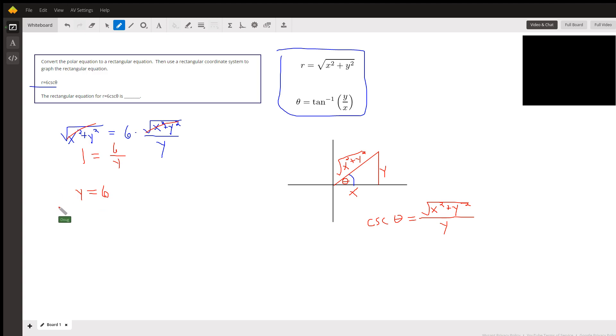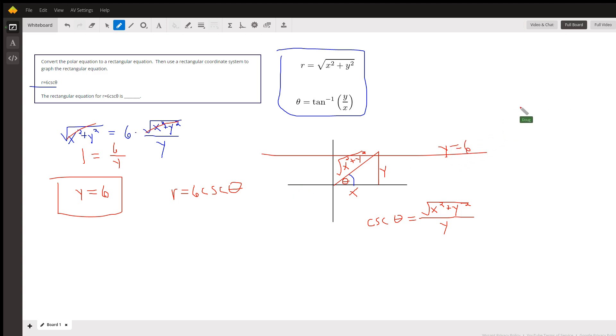And if you go to Desmos and type r equals 6 cosecant of theta, you will see that you do have the line y equals 6. Okay, there you go. Hope that helped. If you have any questions, post a comment.